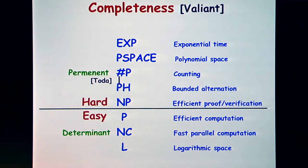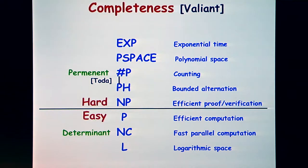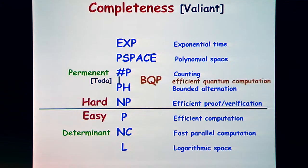The permanent sits not only above NP but above the entire polynomial hierarchy. NP is a one-quantifier kind of statement — 'there exists a clique,' 'there exists a satisfying assignment' — and the polynomial hierarchy involves statements with a finite number of alternating quantifiers. All of these are easier than problems like the permanent. Also, everything that can be done efficiently on a quantum computer is also easier than the permanent.